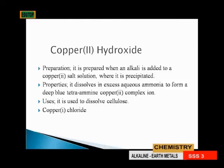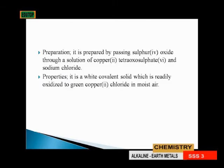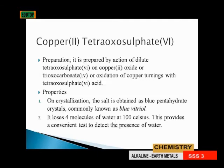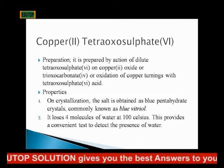That is the compound it gives when dissolved in excess ammonia. Uses: it is used in dissolving cellulose. Copper(I) chloride preparation: it is prepared by passing sulfur dioxide through a solution of copper(II) tetraoxosulfate(VI) and sodium chloride. Properties: it is a white covalent solid which is readily oxidized to give copper(II) chloride in moist air.